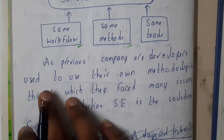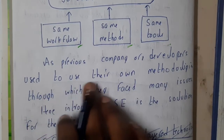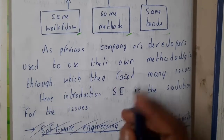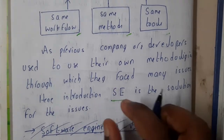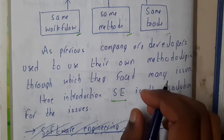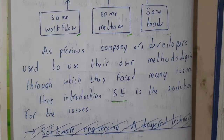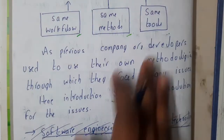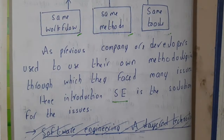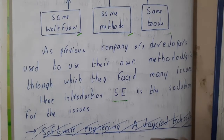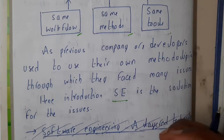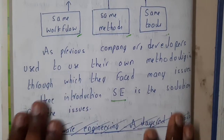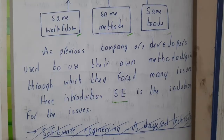Developers used their own methodologies through which they faced many issues. Hence, the introduction of software engineering was the solution to this whole problem. Software engineering came like a spark and changed everything — now whenever you give a project to a company, they will complete it with demos and a well-defined process.